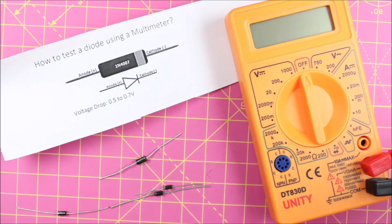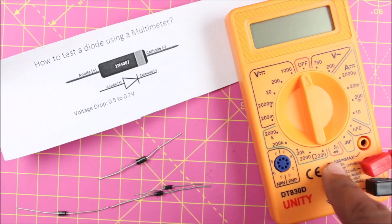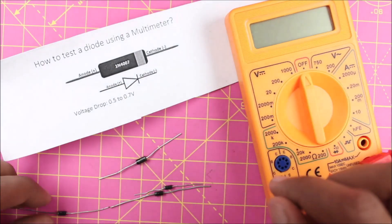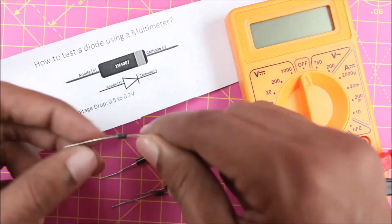Hi, this is Ashwinth again with a quick multimeter tutorial series. In this video I'll show you how you can use a multimeter to check if your diode is in a working state or if it is damaged.